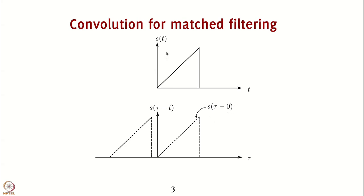In other words, you're taking s(t), flipping it, convolving it and taking it at 0 offset. Of course, in a causal implementation, there may be other delays. But this is the way by which you can visualize that correlation can be implemented as convolution by just taking s(t), flipping it, and using it for convolution with s(t). We will now inspect this briefly in GNU Radio.